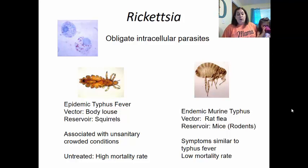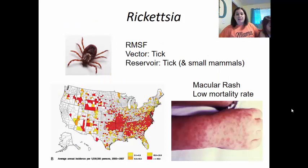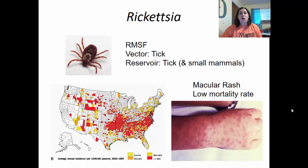It is reported that Anne Frank died from typhus fever. Endemic murine typhus has a rat flea as vector and rodents — particularly mice — as the reservoir. Symptoms are similar to typhus fever, but the mortality rate is very low. Rocky Mountain spotted fever has the tick as both vector and reservoir, as well as some small mammals. One notable feature is trans-ovarian passage — when infected ticks lay eggs, the offspring are also infected.